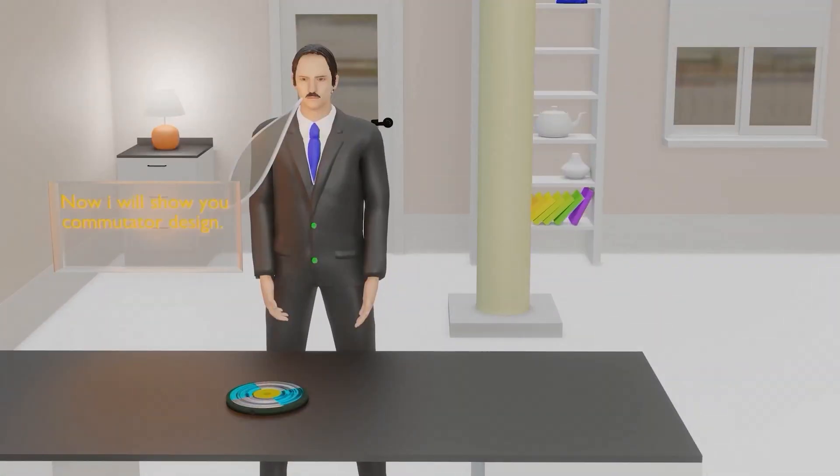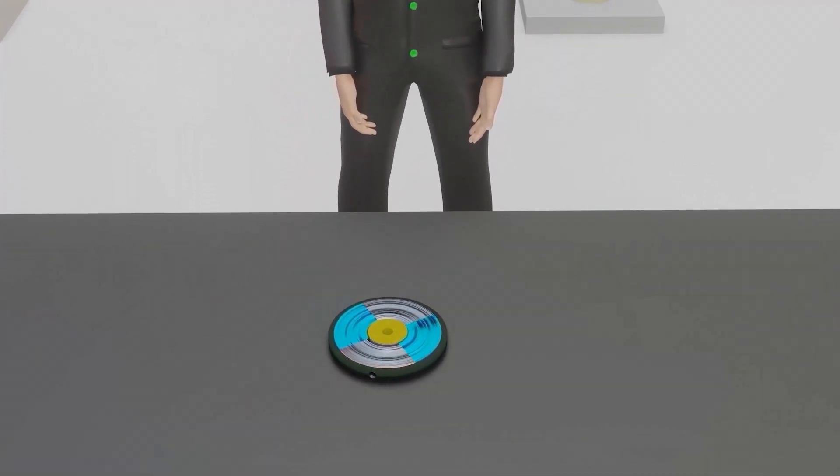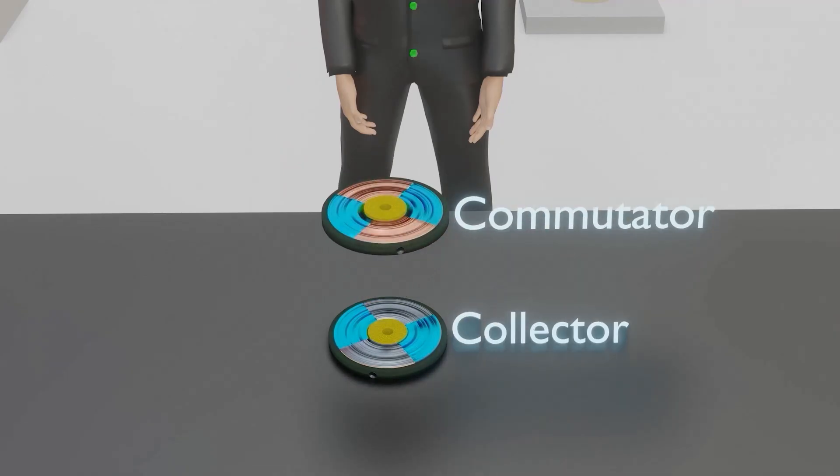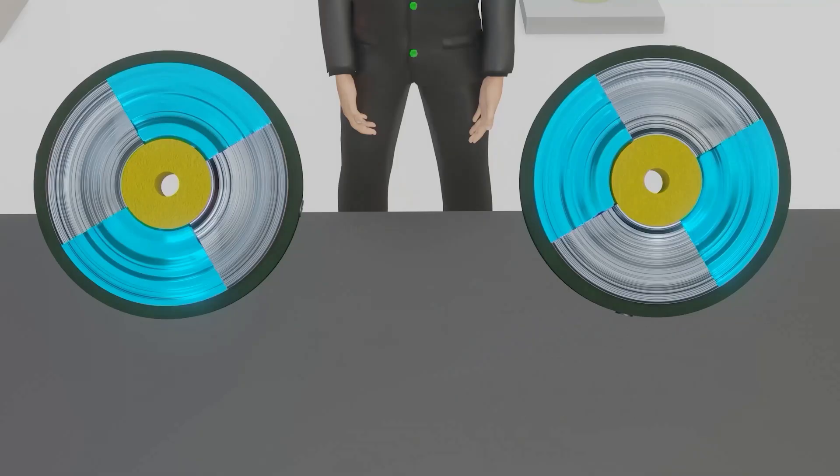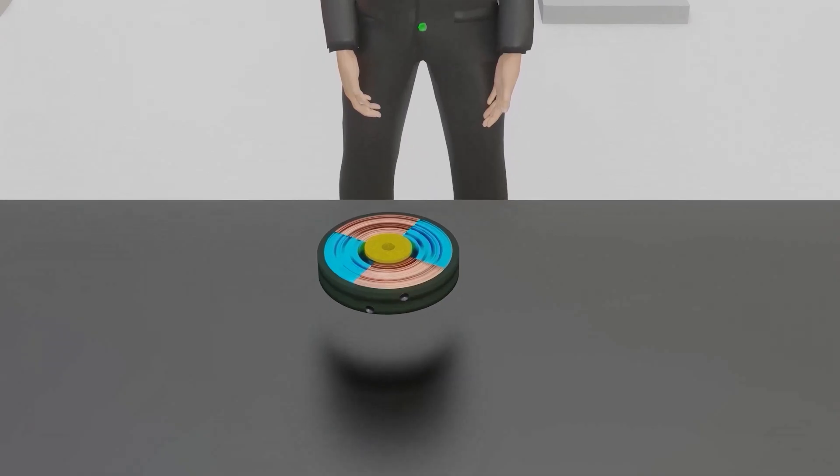Now, we will see the commutator designed by Nikola Tesla. The commutator is designed exactly in the same way as the collector. That is, the commutator is just a copy of the collector. The commutator and the collector are mutually adapted to one another, and are alike in mechanical structure. Now we will see how this commutator and collector are connected in a dynamo-electric machine.